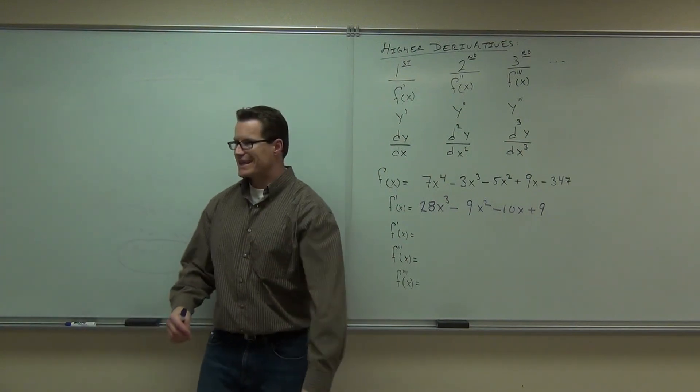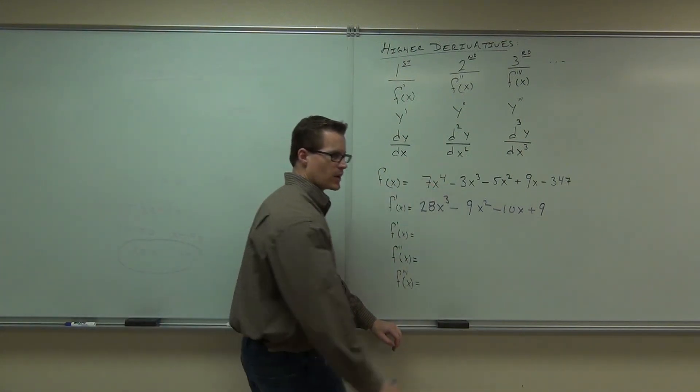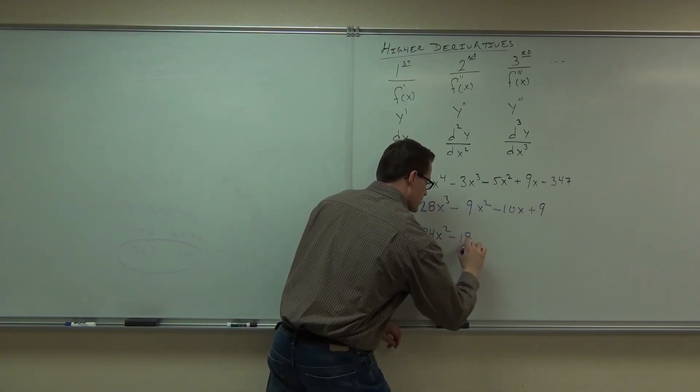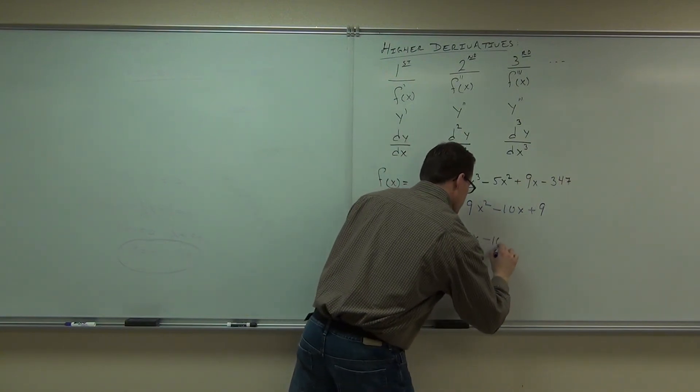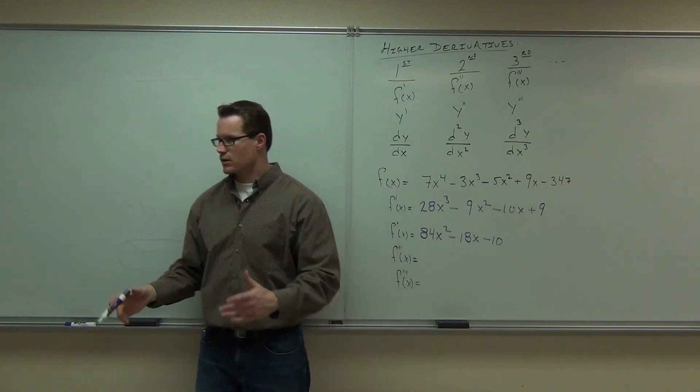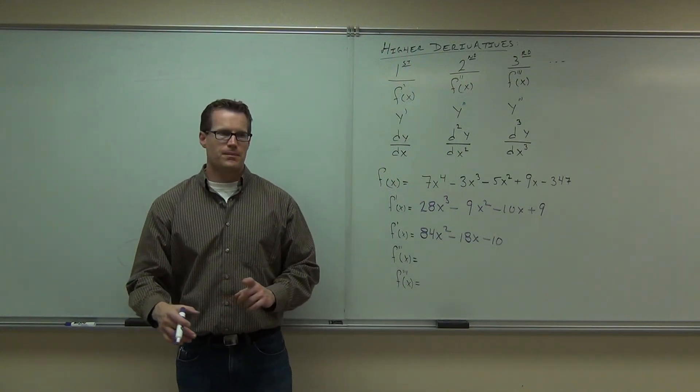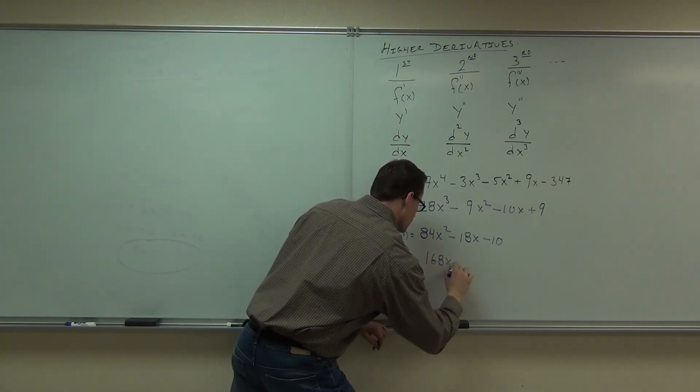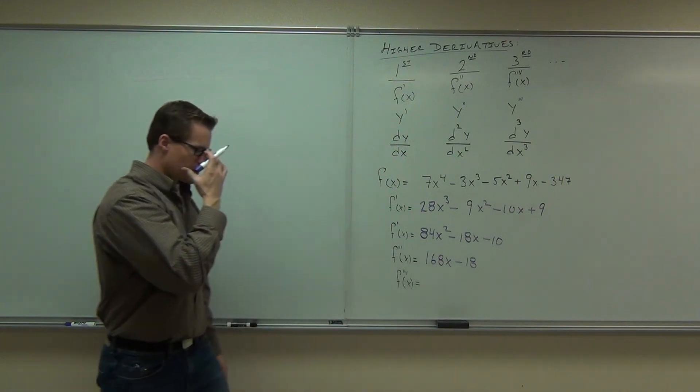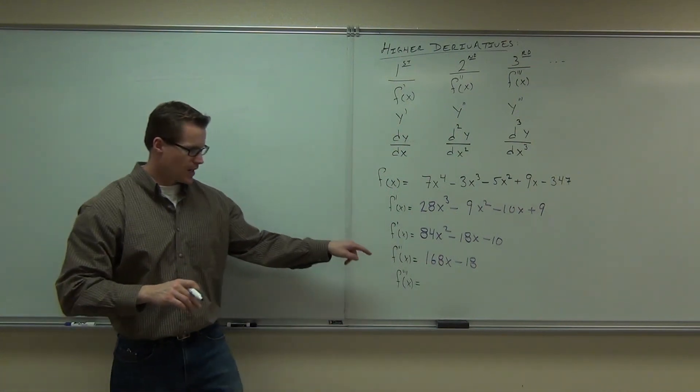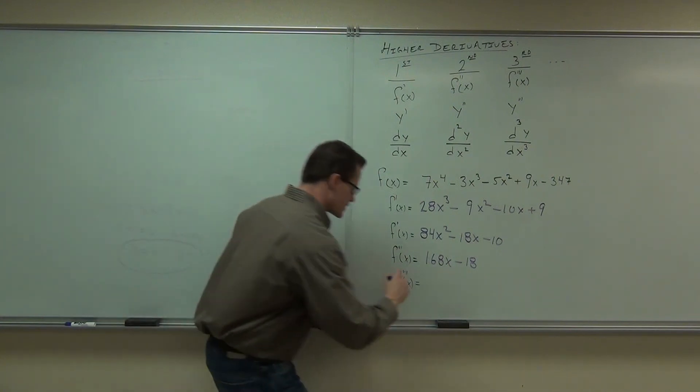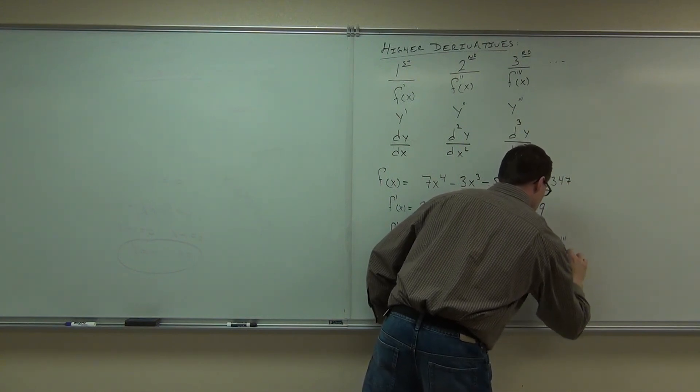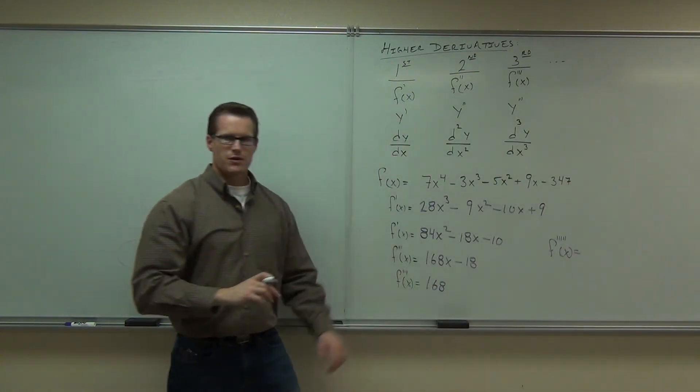Okay, next up, second derivative. We just take the derivative again. So we're going to do, oh, what's 28 times 3? What do we do? 60x squared minus 18x. You got that one right. Minus 10. What happens to the 9? It's a constant. It goes away. Now what? Then we take the derivative again, and yeah, we're going to get 168x minus 18, and that constant goes away, 168. Well, let's do the fifth derivative. What's the derivative of 168?